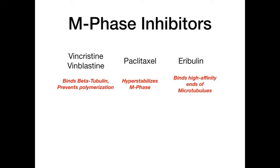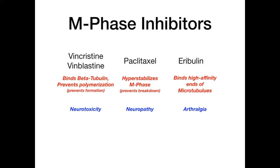The mechanism of these mitosis phase inhibitors: vincristine/vinblastine bind to beta-tubulin and prevent polymerization of the microtubule. Paclitaxel hyperstabilizes the M phase — it locks the microtubule and prevents breakdown. Eribulin binds to the high-affinity end of the microtubule and prevents it from doing its job. So vincristine/vinblastine prevent formation of the mitotic spindle by preventing polymerization, whereas paclitaxel prevents breakdown by hyperstabilizing it.